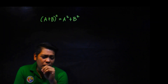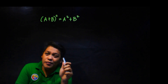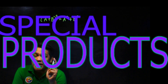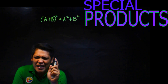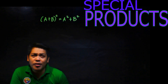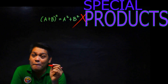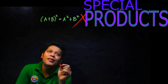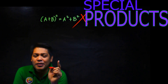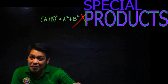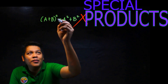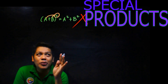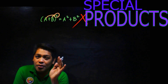Let's move to number 4: special products. Many make mistakes here. A common error is: (a + b) squared equals a squared plus b squared — which is wrong. A big mistake. You're thinking the squared can be distributed to each letter, so you wrote a squared plus b squared.